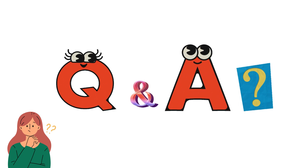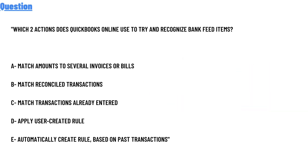Our today's question is: which two actions does QuickBooks Online give users to try and recognize bank feed items? Option A: match amount to several invoices or bills.